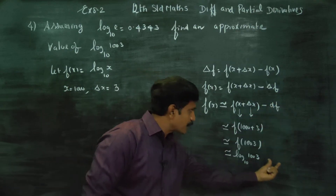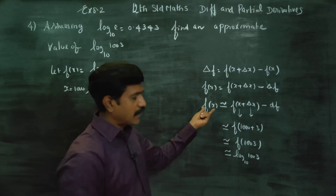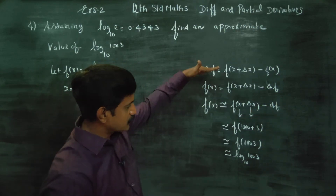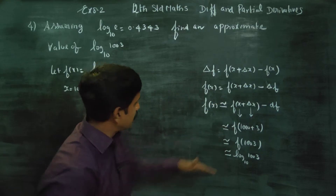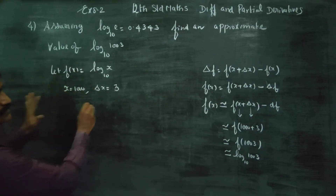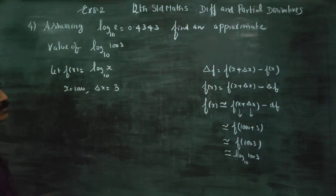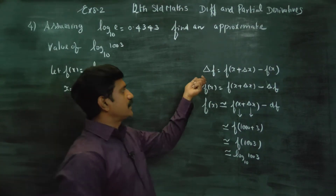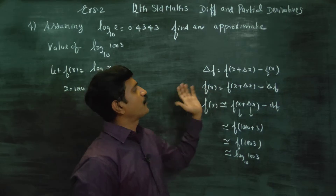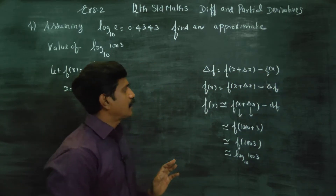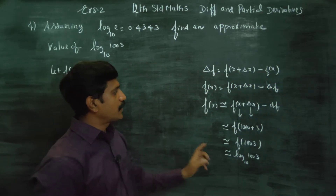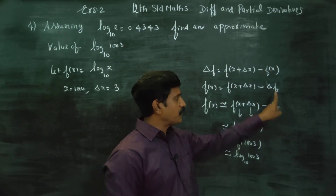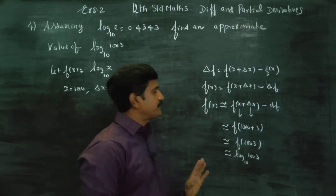The target df is equal to f of x. The differential delta f formula is equal to df.